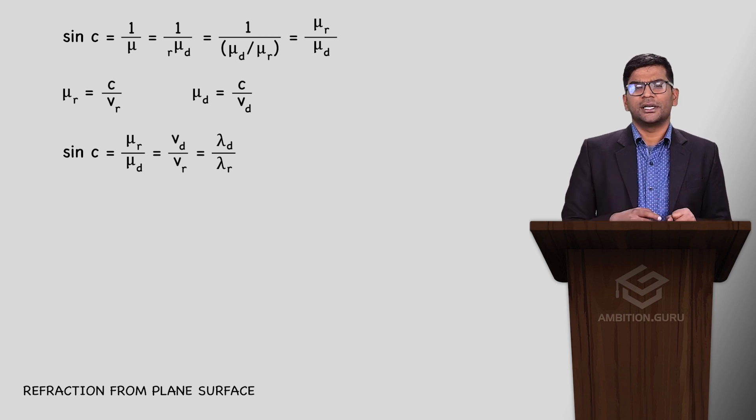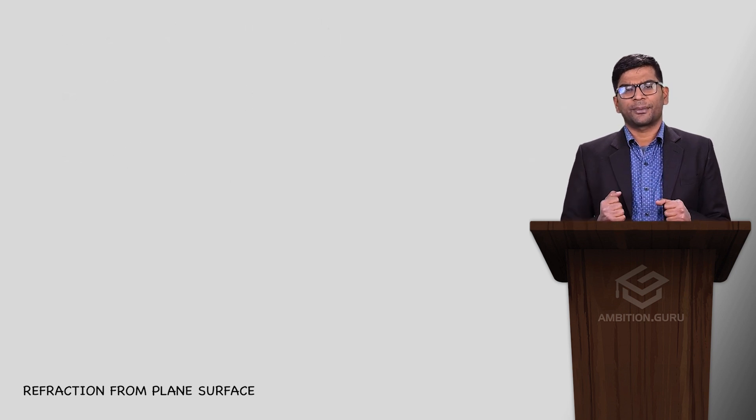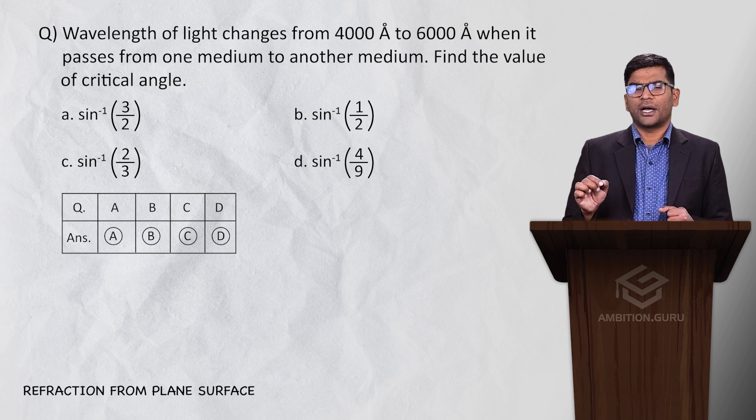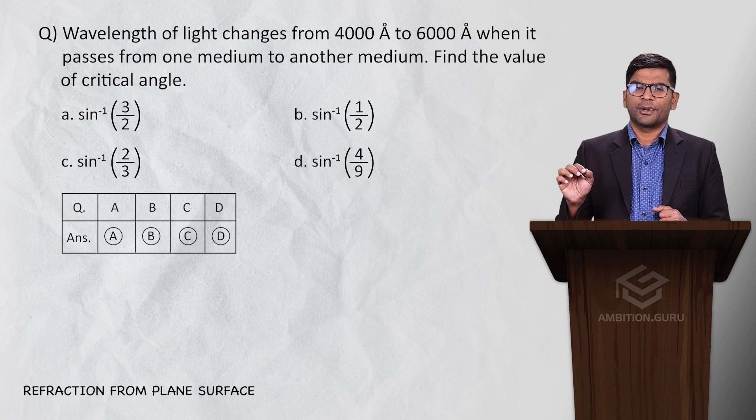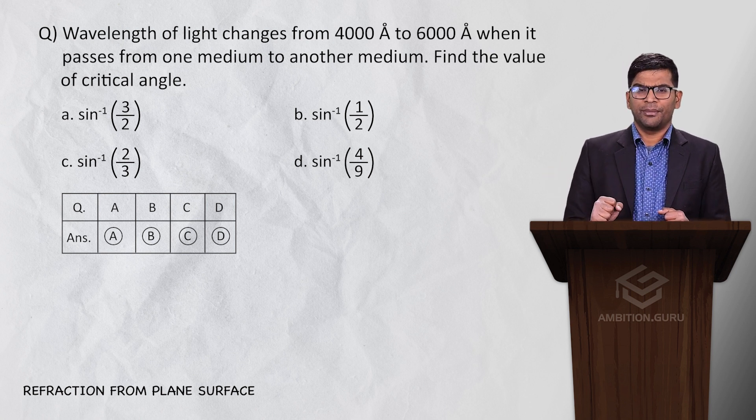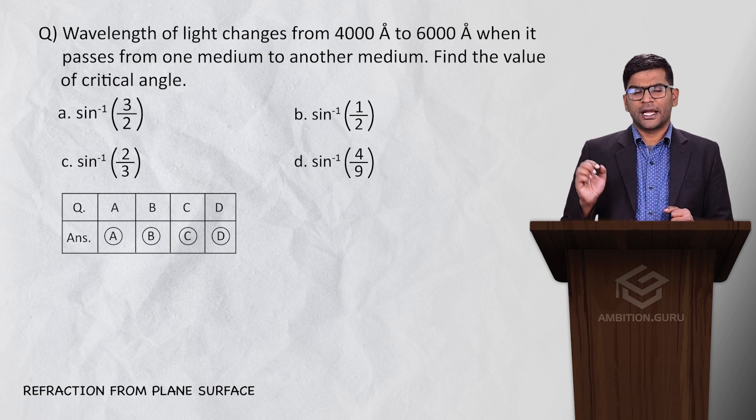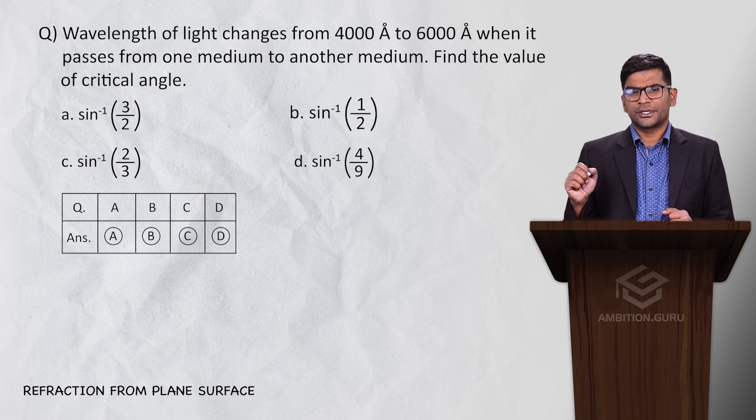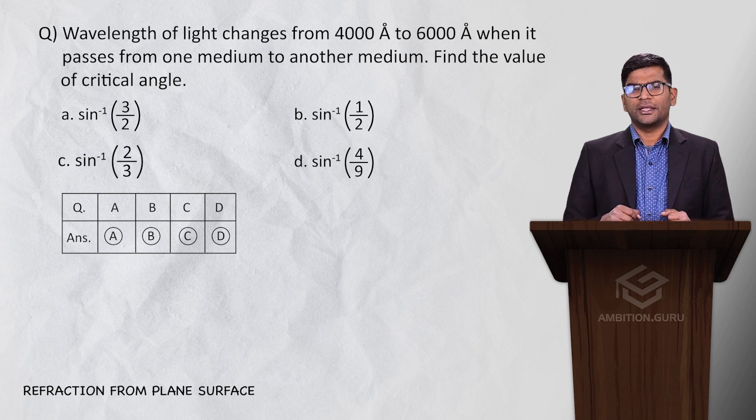Now how are questions given? How to drill the question? Let's see this question: Wavelength of light changes from 4000 angstrom to 6000 angstrom when it passes from one medium to another medium. Find the critical angle. Option A: sin inverse three by two. Option B: sin inverse one by two. Option C: sin inverse two by three. Option D: sin inverse four by nine.